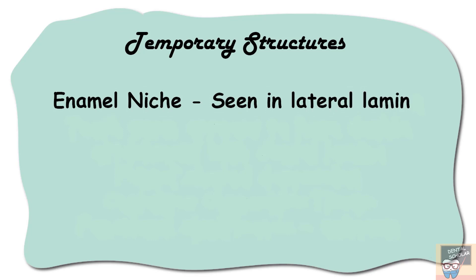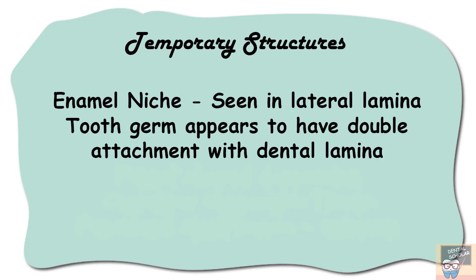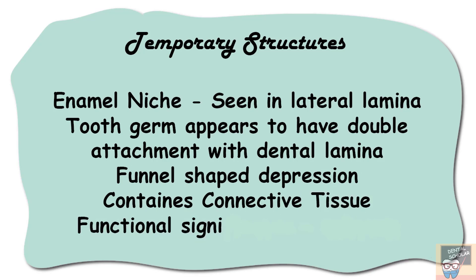The next temporary structure is the enamel niche, which represents a defect in the lateral lamina — the attachment between the dental lamina and the developing enamel organ. Because of this enamel niche, the tooth germ appears to have double attachment with the dental lamina. It appears as a funnel-shaped depression containing connective tissue and probably has no functional significance.